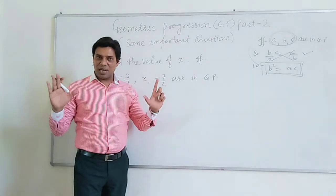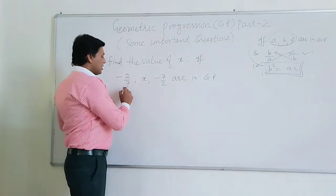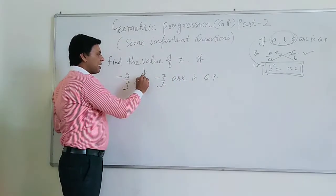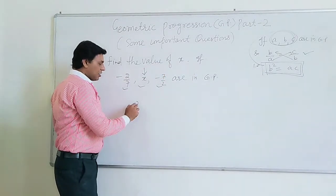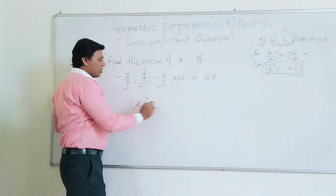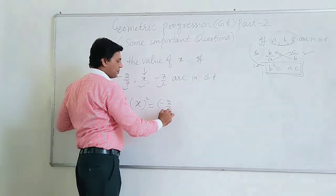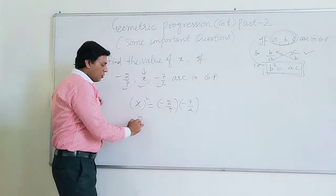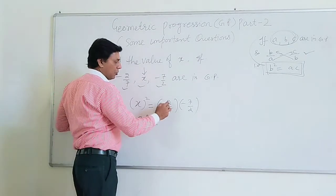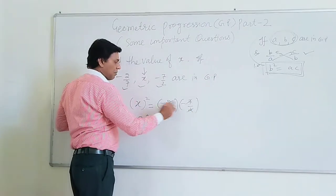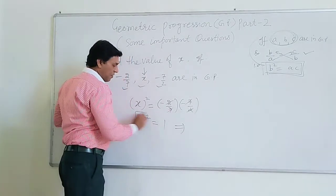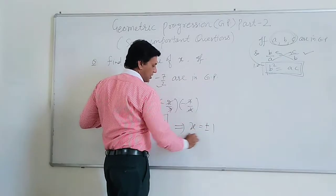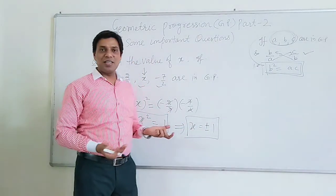We will use the same concept in this question. These 3 terms are given in GP, so this is the middle term. According to that situation, the square of the middle term will equal the product of the extreme terms. So we have X squared equal to — after cancellations — plus 1. Whenever X squared is equal to 1, X may be plus 1 or minus 1. So this is the value of X — easy question.